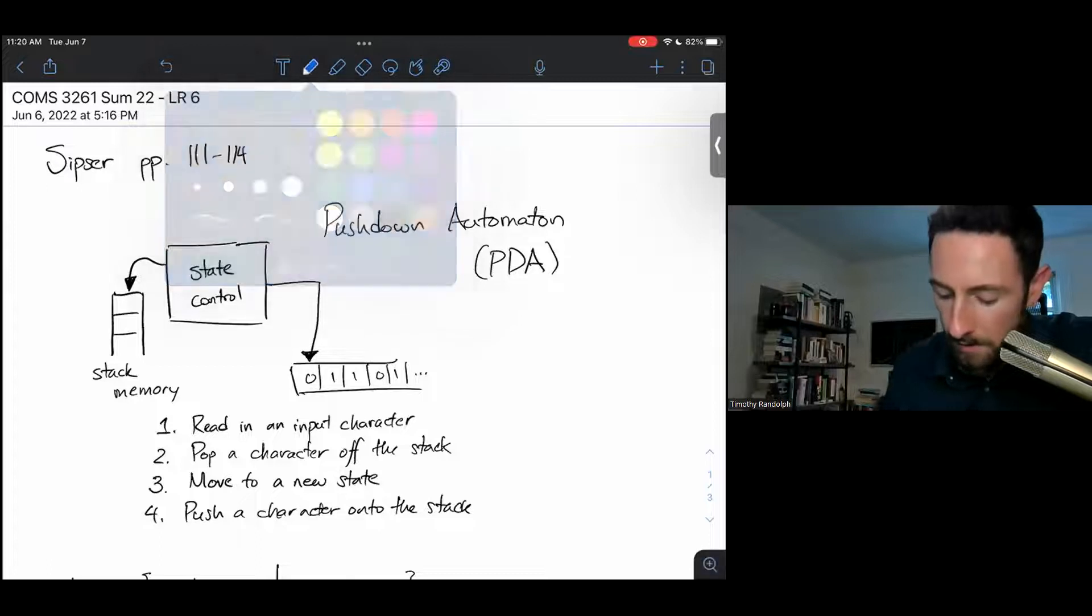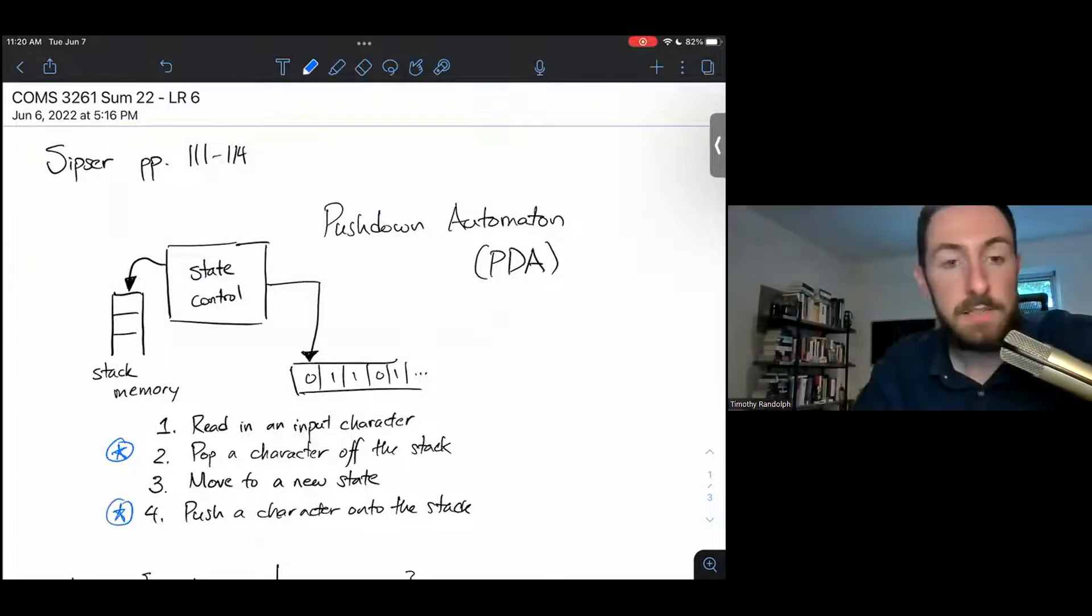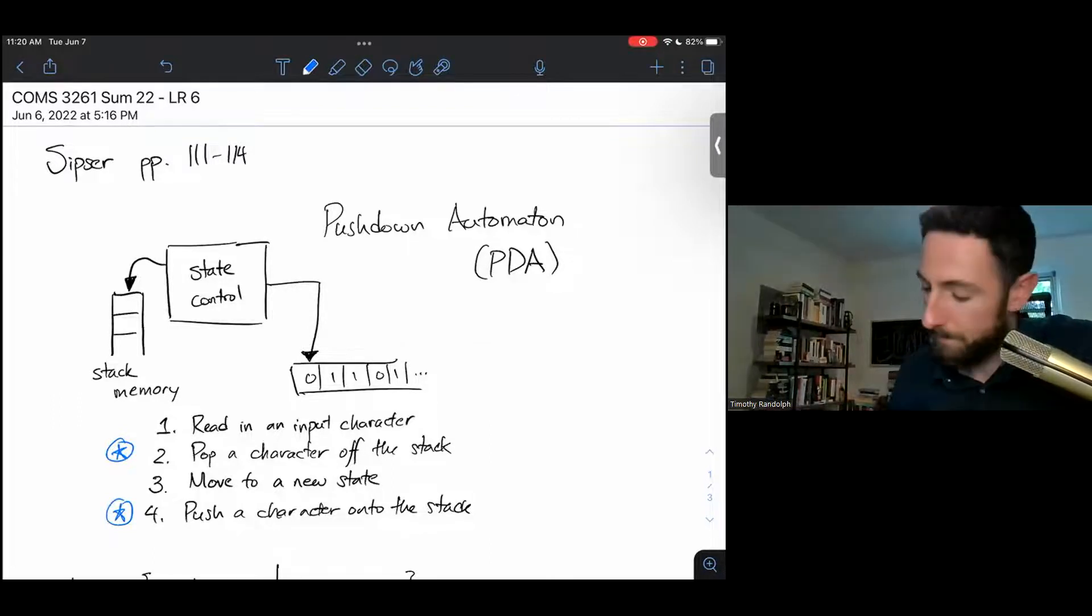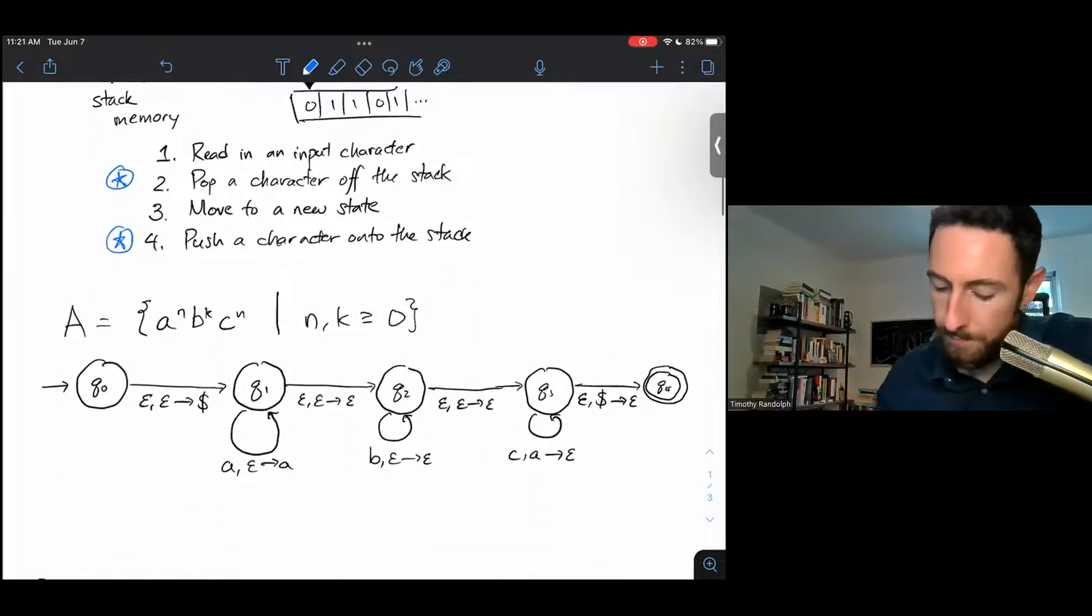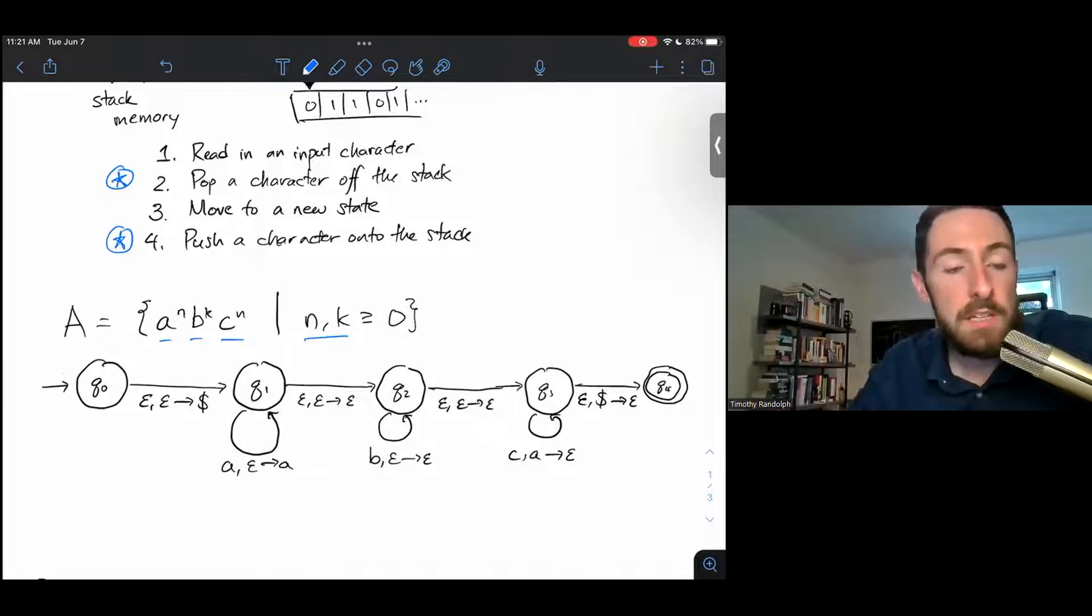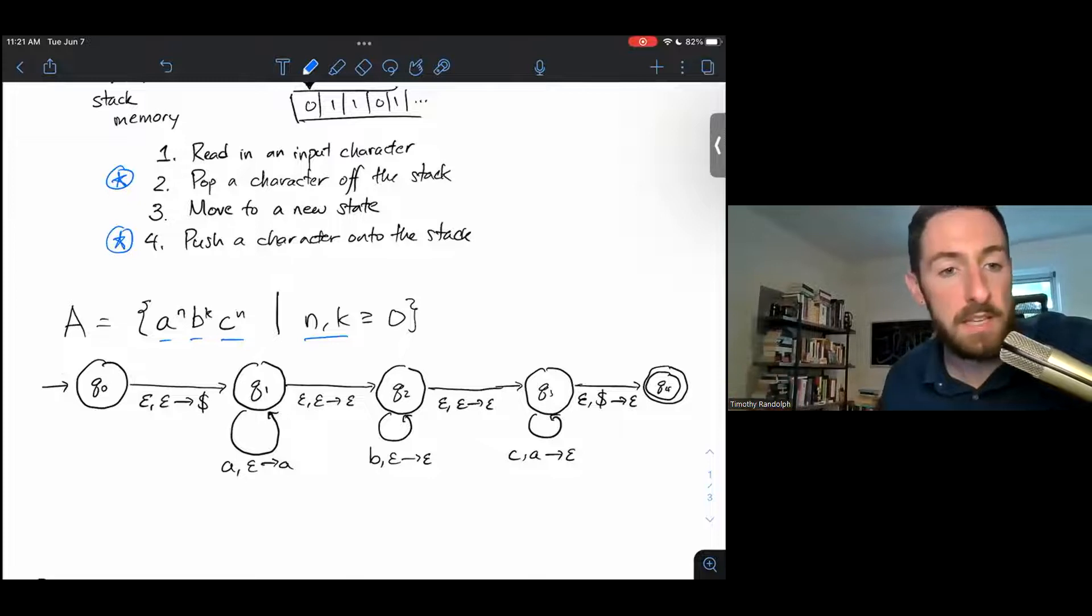So the new steps here are steps two and four. And they're optional. We can push and pop empty strings, which is the same as not pushing or popping anything at all. But these two new potentialities are the things which will change how our PDAs work. So let's see an example. Here is a pushdown automaton. It recognizes the language that is a to the n, b to the k, c to the n, such that n and k are greater than or equal to zero. So this will be some string of A's followed by some string of B's followed by some string of C's, with the strings of A's and C's having equal length. The string of B's can be any length, can be any k.